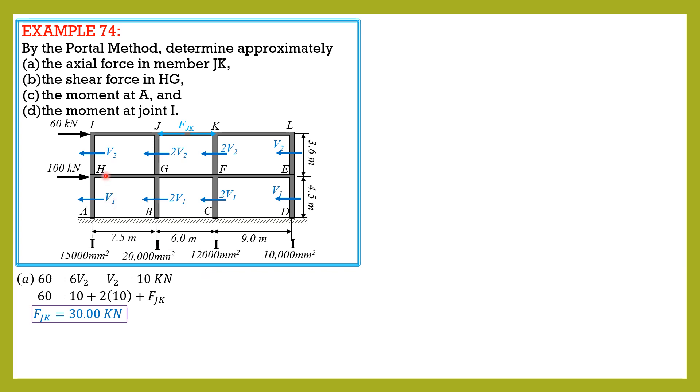For the shear force in HG, we draw free body diagram of this part and this part so that we can analyze. Likewise, 60 plus 100 equals, so this is the FBD of the upper part. 60 plus 100 equals 6V sub 1, so that means V sub 1 is equal to 26.67 kilonewtons, necessary for solving the shear in HG.